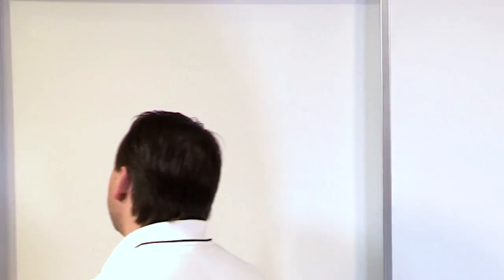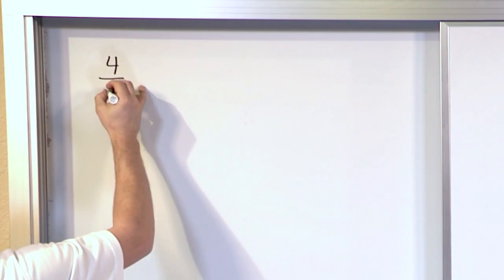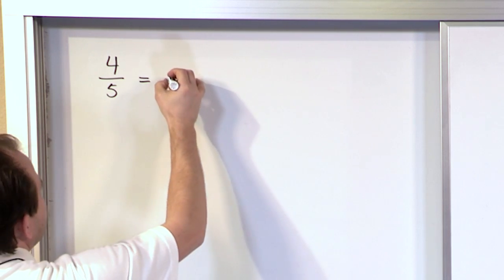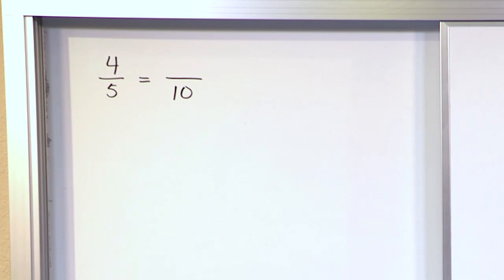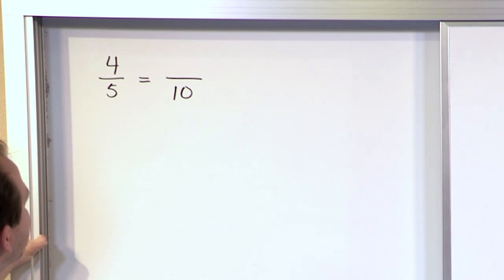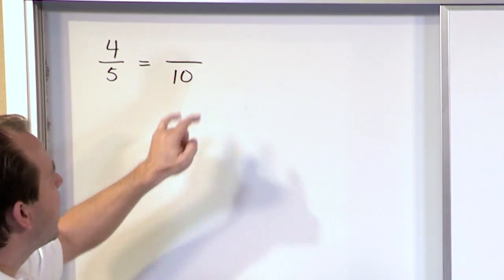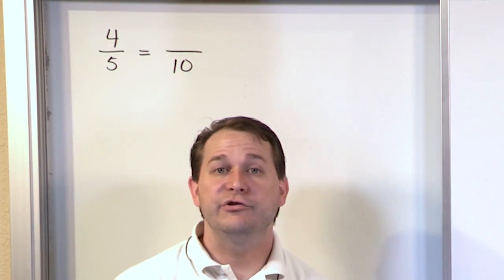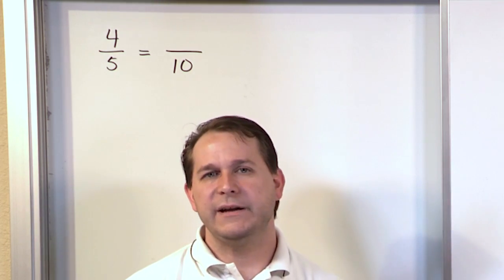So here we're going to do renaming fractions, and the best way to show you what we're talking about is just to give you a problem. What if we have the fraction 4 fifths, and on a quiz or a test, you might see that it's equal to a fraction with a bottom number of 10. What you want to do is provide an answer — what would the top number be? You have 4 fifths, and you're told it's equal to another fraction with a bottom number of 10, so it's your job to figure out what the top number would have to be.